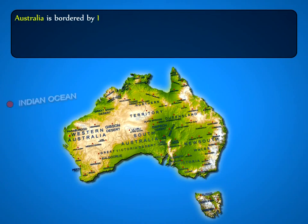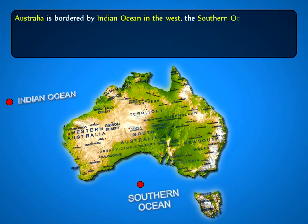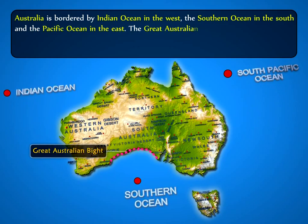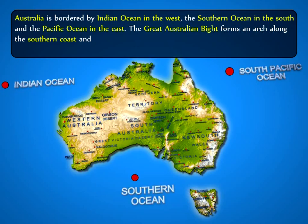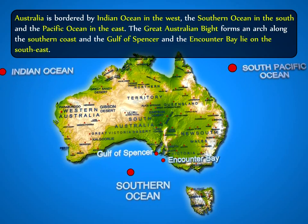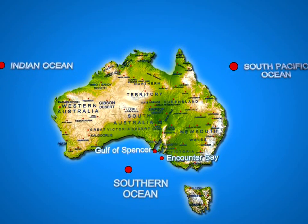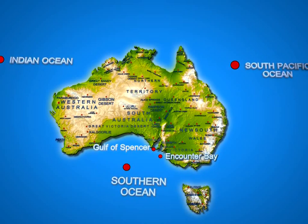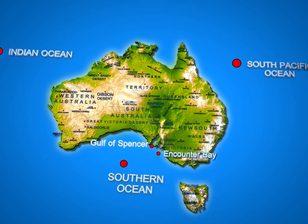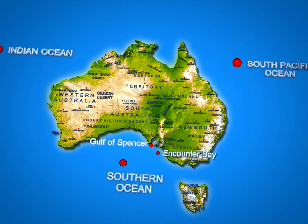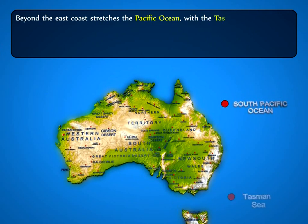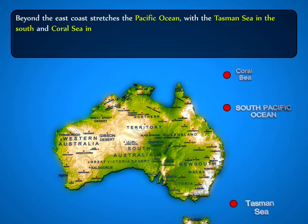Australia is bordered by the Indian Ocean in the west, the Southern Ocean in the south, and the Pacific Ocean region in the east. The Great Australian Bight forms an arch along the southern coast, and the Gulf of Spencer and Encounter Bay lie on the southeast. Australia lies close to Southeast Asia and many islands stretch between them, remnants of the land bridge that once connected the two continents millions of years ago. Beyond the east coast stretches the Pacific Ocean with the Tasman Sea in the south and the Coral Sea in the north.